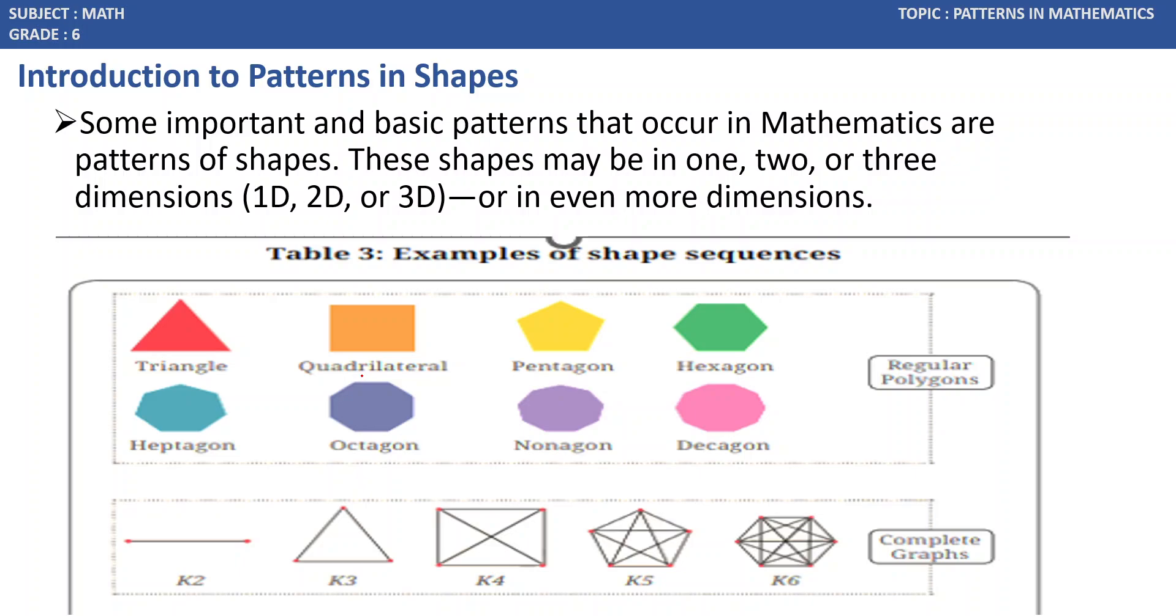For example, Triangle, Quadrilateral, Pentagon, Hexagon, Heptagon, Octagon, Nonagon, Decagon are regular polygons.